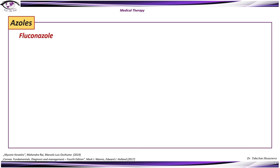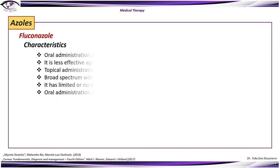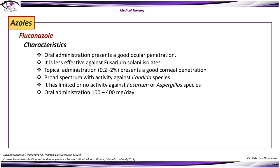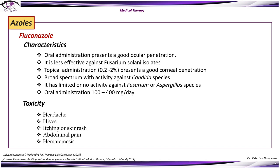Fluconazole: oral administration presents good ocular penetration, and topical administration presents good corneal penetration. It has a broad spectrum with activity against Candida species but limited or no activity against Fusarium species. It is less effective against Fusarium solani isolates. Oral administration is between 100 and 400 mg per day. Toxicity includes headache, hives, itching or skin rash, abdominal pain, and hematemesis.